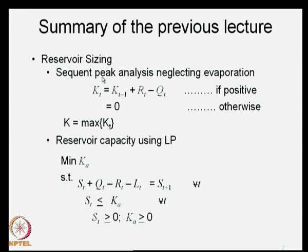Classically, this was done by the mass diagram or the ripple diagram, but the ripple diagram is extremely difficult when accommodating time-varying demands and storage-dependent losses. We then introduced the sequent peak algorithm: K_t = K_{t-1} + R_t - Q_t. Here, R_t minus Q_t indicates the deficit occurring during time period t. Q_t is the inflow, R_t is the demand or release from the reservoir, so R_t minus Q_t is the deficit.